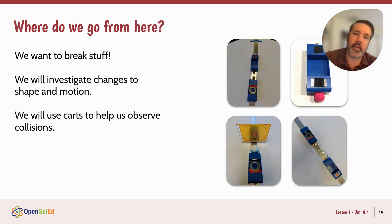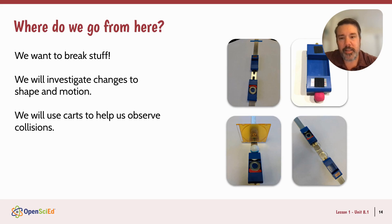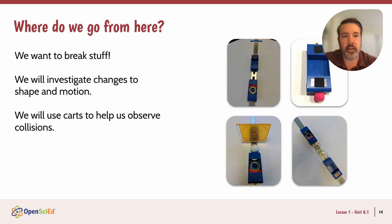So where do we go from here? In lesson two, we actually break stuff — that's what we want to do. We find out that breaking stuff is challenging, and so we're motivated to use carts and tracks so we can study collisions a little easier. We investigate more about what's happening with shape and motion.